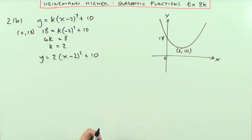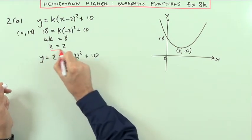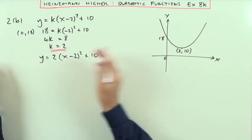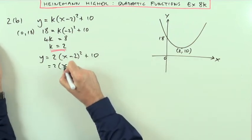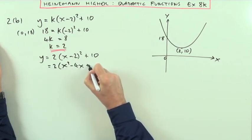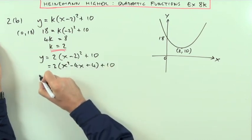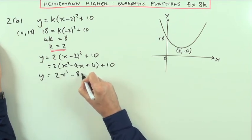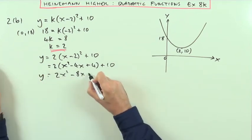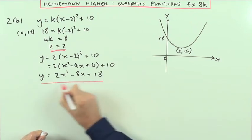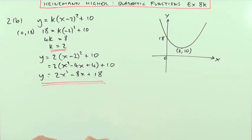It doesn't want the completed square form — it wants the standard form. So multiplying out: 2 times (X squared minus 4X plus 4) plus 10 gives Y equals 2X squared minus 8X plus 8 plus 10, so Y equals 2X squared minus 8X plus 18. That's the second one.